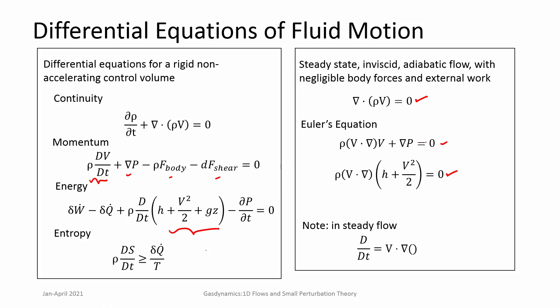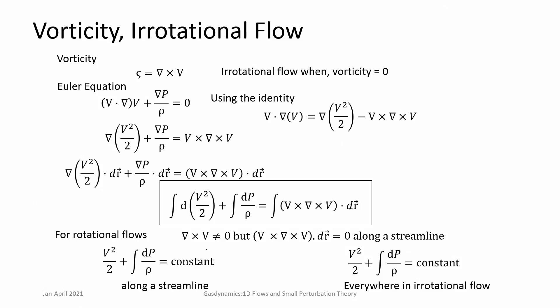Now we look at how these equations can be manipulated. We are looking at an inviscid irrotational framework. Vorticity corresponds to rotation in the fluid element; when there is no rotation, the flow is irrotational, or vorticity is zero. Vorticity is related to the velocity field by a curl. For irrotational flows, curl of velocity is zero, where velocity is a vector. In a three-dimensional field, it is ui + vj + wk — this is the general form.